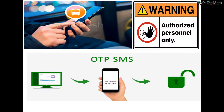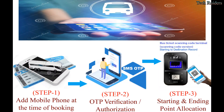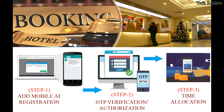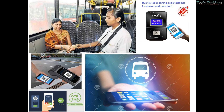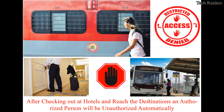Only an authorized person can operate this system. At the time of booking or reservation, phone number and OTP authorization should be done, providing arriving and destination point in case of bus or train, and check-in and check-out time in case of hotels. The authorized person can only control the individual and selected area. A person will be unauthorized after the allocated time and distance.